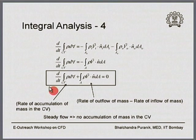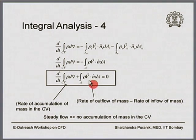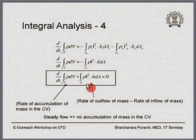Just to recap: the first term on the left-hand side signifies the rate of accumulation of mass within the control volume. The second term on the left-hand side signifies the rate of outflow of mass minus the rate of inflow of mass — in other words, the area integral is essentially the net rate of outflow of mass from the control volume.